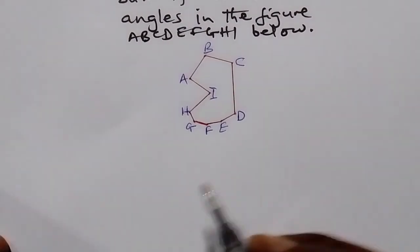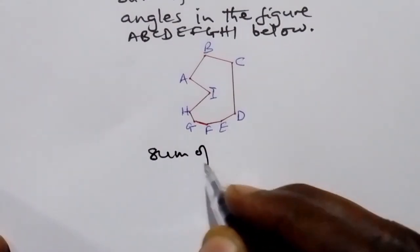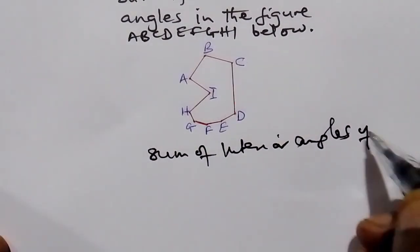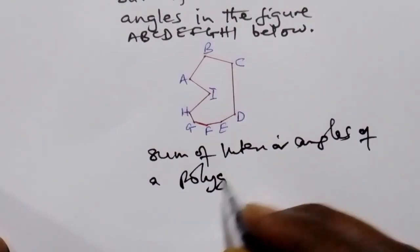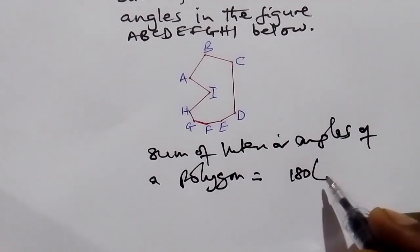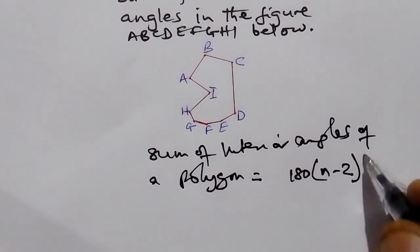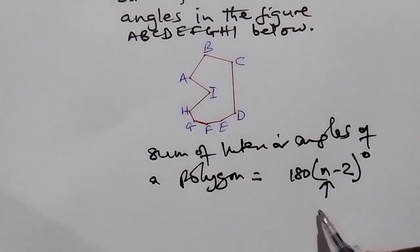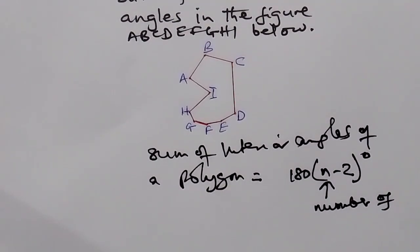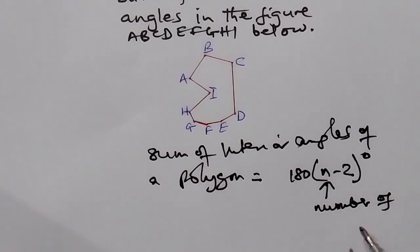The formula for finding the sum of interior angles of a polygon is given by 180 times n minus 2 degrees, where n is the number of sides.